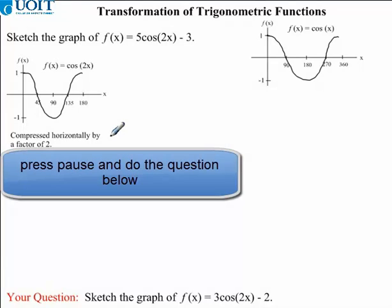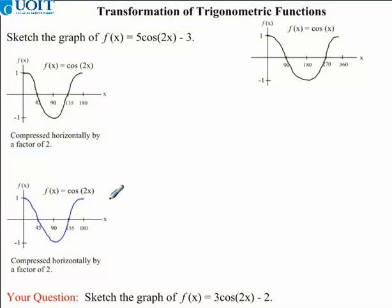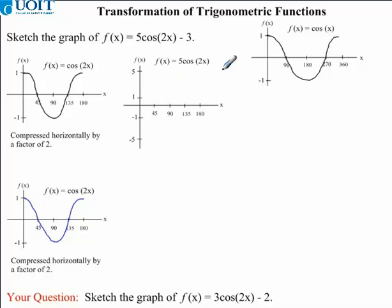I would now like you to apply this transformation to the question that you were given. Coming back to our question, we are now going to apply our second transformation — this 5 in front of cos(2x). We need to draw another graph: f(x) = 5 times cos(2x). Because our graph contains the function cos(2x), we're going to apply this transformation based on our previous graph. The 5 in front of cos(2x) will cause our previous graph to stretch vertically by a factor of 5.